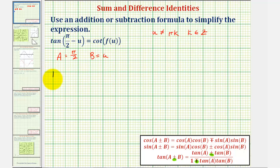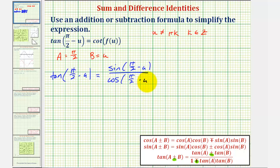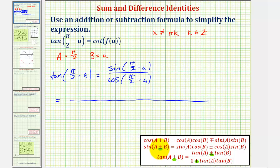We can say that tangent of pi over two minus u equals sine of pi over two minus u divided by cosine of pi over two minus u. This is the quotient identity: tangent theta equals sine theta divided by cosine theta. Now we'll apply the difference identities for sine and cosine. In both cases a is still pi over two and b is still u. For sine of the quantity pi over two minus u, since we have a difference we'll have a difference when applying the identity. For cosine of pi over two minus u, since we have a difference we'll have a sum when applying the identity.